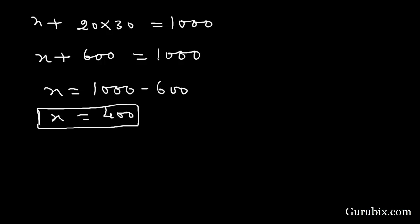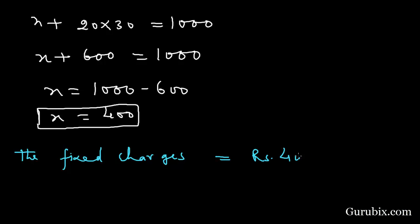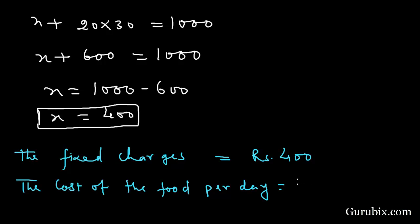Therefore, the fixed charges equal to Rs. 400 and the cost of food per day equals to Rs. 30. This is the solution of the question. Thank you.